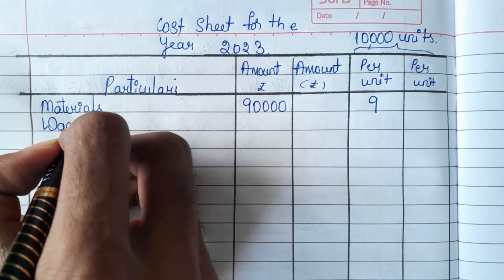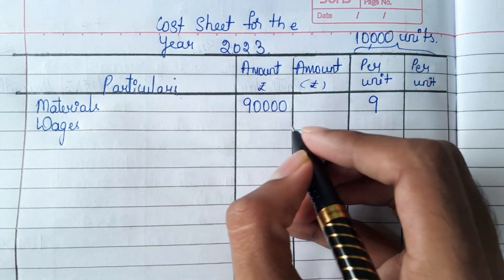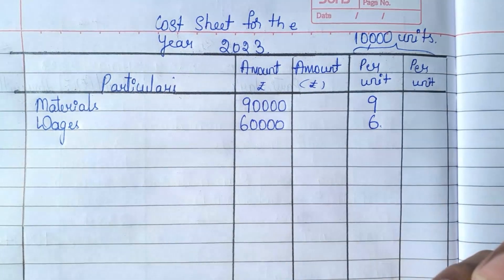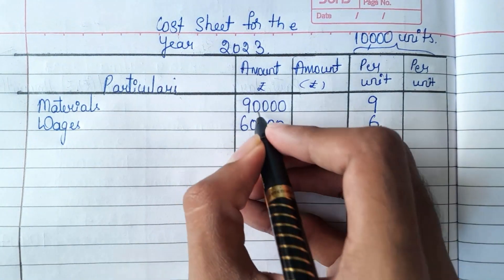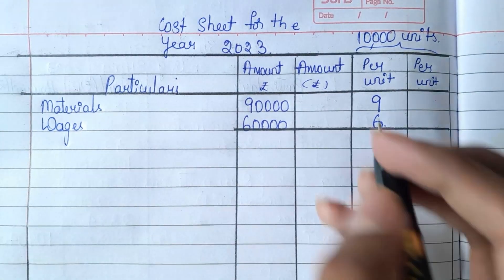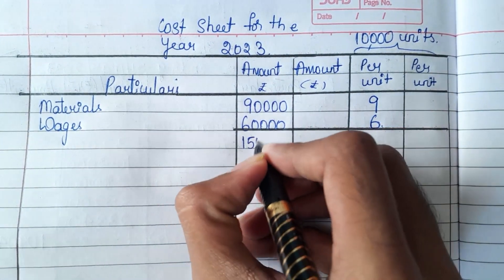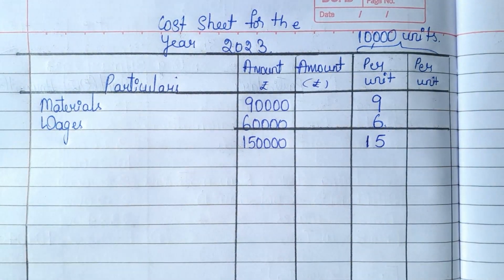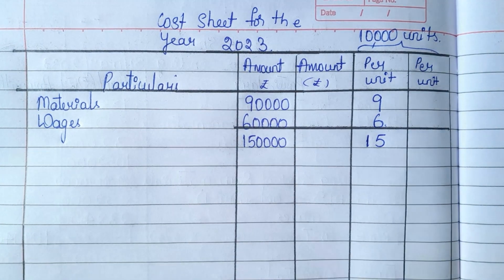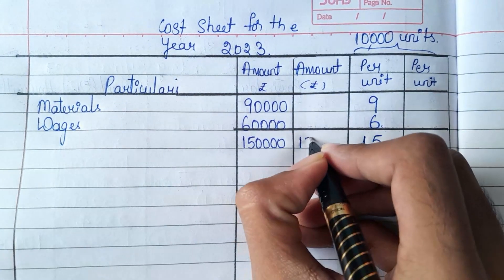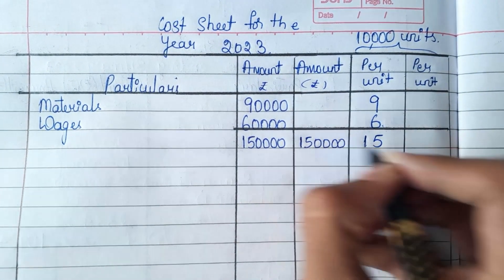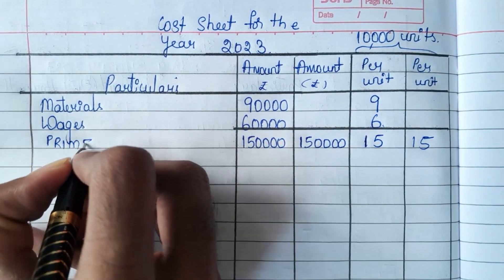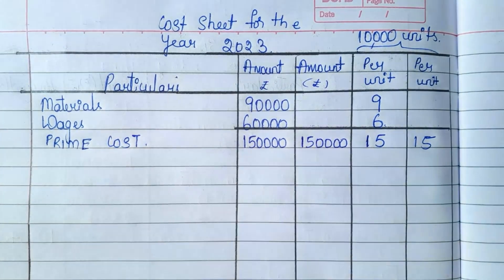The second item is wages. Wages is 60,000, so it is 6 rupees per unit. Now, add these two. We will get 1,50,000, and for one unit it will be 15 rupees. This 1,50,000 is our prime cost.